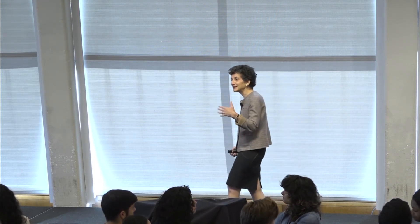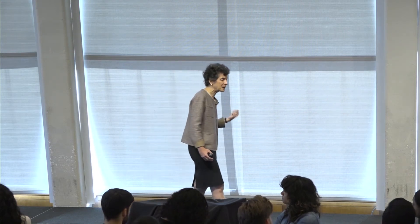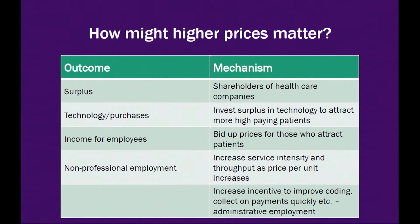How could high prices lead to costs? Imagine that the high prices just come from the sky — we're not going to worry about where they come from for the moment. Where could those high prices lead? The simple answer that people fixate on right away is: because the prices are high, people are making a lot of money — the shareholders of healthcare companies, the executives. Actually, if that were true, it would be less of a problem. They'd just be taking the money home and we'd be sort of done with it.